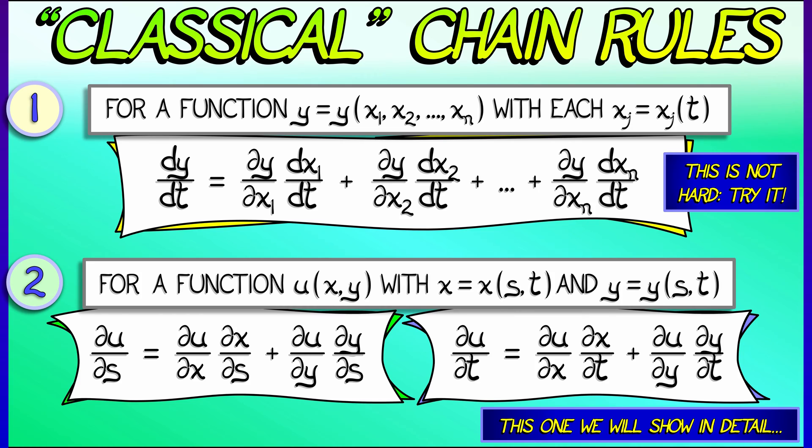I mean, yeah, you can say fine, partial x's kind of cancel and partial y's kind of cancel, but that's not a reason. What's the reason? The reason is the chain rule.